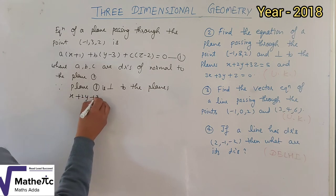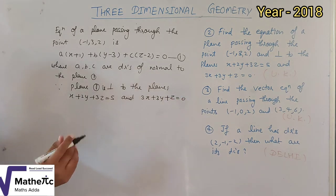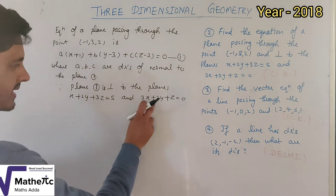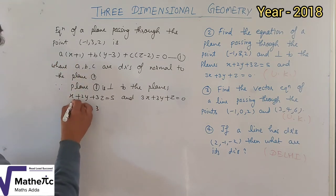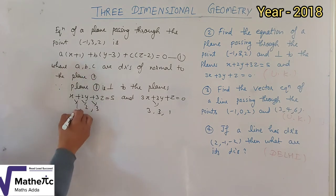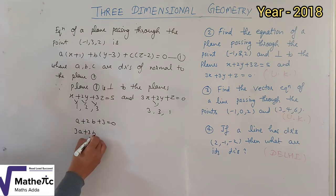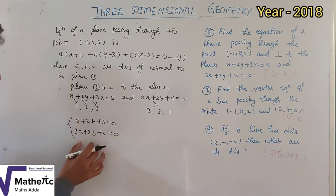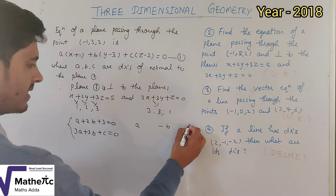The two given planes are x + 2y + 3z = 5 and 3x + 3y + z = 0. Since our plane is perpendicular to these, the normal direction ratios a, b, c satisfy: a + 2b + 3c = 0 and 3a + 3b + c = 0. To find a, b, c we use cross multiplication from these two equations.